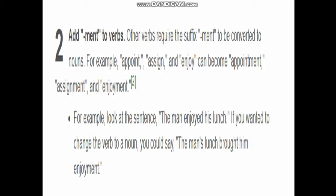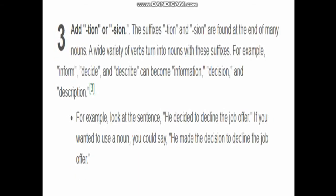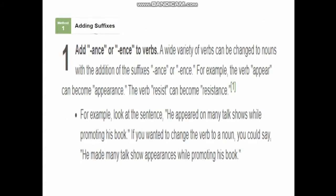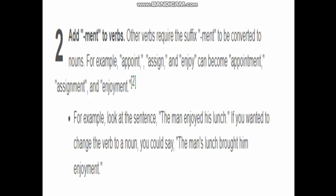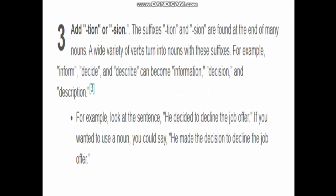The third technique is to add -tion or -sion to verbs. For example, 'decide' becomes 'decision' and 'describe' becomes 'description.' Adding -sion or -tion changes the verb into a noun, and the sentence meaning and structure also change accordingly.